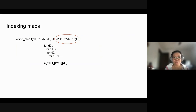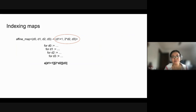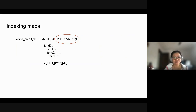Each affine expression uses the induction variables to define how you want to access the tensor along that dimension. If your tensor has three dimensions, you need three affine expressions on the right-hand side. If it's a two-dimensional tensor, you put two affine expressions for that tensor. The indexing map specifies how to index into each element in the tensor.